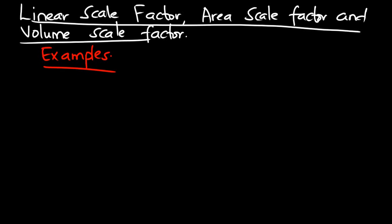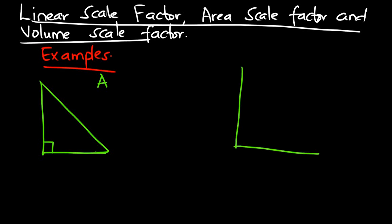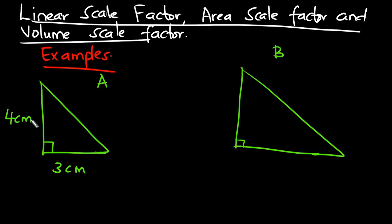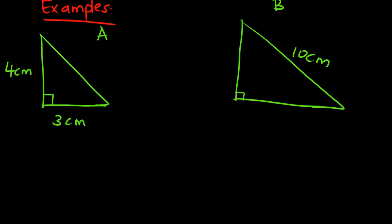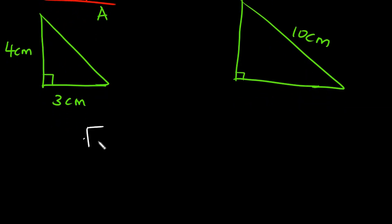Let's say we have a triangle — let's name this triangle A — and then we have another triangle, let's name it B. We are told that these two triangles are similar. Triangle A measures three centimeters by four centimeters, and we are given the hypotenuse of triangle B as 10 centimeters. Triangle A and B are similar, and the question is: find the area of triangle B.